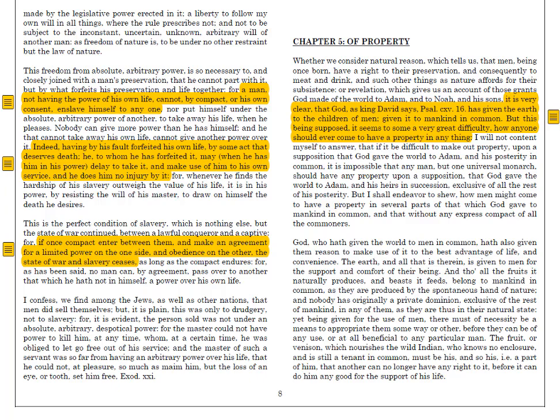Locke begins Chapter 5 with what he considers to be the foundational conceptual dilemma with how we come to own property. He writes: whether we consider natural reason, which tells us that men, being once born, have a right to their preservation, and consequently to meat and drink and such other things as nature affords for their subsistence; or revelation, which gives us an account of those grants God made of the world to Adam and to Noah and his sons. It is very clear that God has given the earth to the children of men, given it to mankind in common. But this being supposed, it seems to some a very great difficulty how anyone should ever come to have a property in anything.